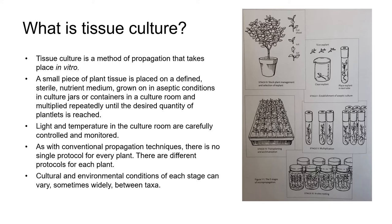Light and temperature in the culture room are carefully controlled and monitored. As with conventional macro propagation techniques, there's no single protocol that's used for every plant. Cultural and environmental conditions of each stage can also vary, sometimes widely, even between cultivars of the same species.